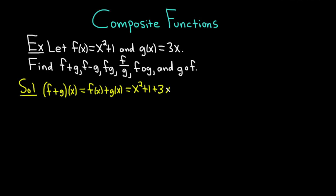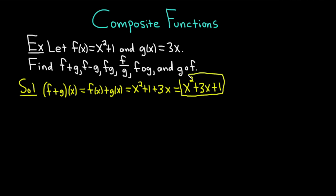And that's pretty much it. It's best to write your answers where the exponents are descending — so you write x squared first, then 3x, then the 1. You can see how they get smaller in exponents. So that would be (f+g)(x) = x² + 3x + 1.